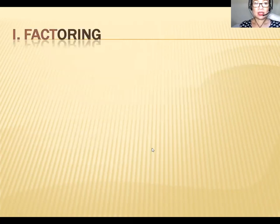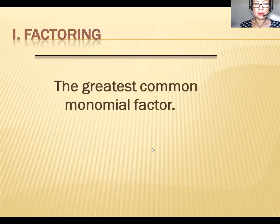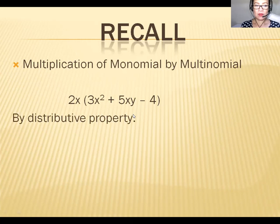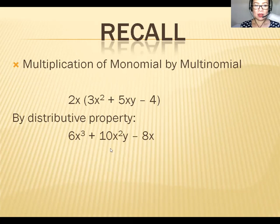Okay, factoring the greatest common monomial factor. Recall our lesson on Grade 7 algebra — the multiplication of a monomial by a multinomial. For example, 2x times (3x² + 5xy − 4). Using the distributive property, you distribute the monomial to the multinomial: 2x times 3x² gives 6x³.